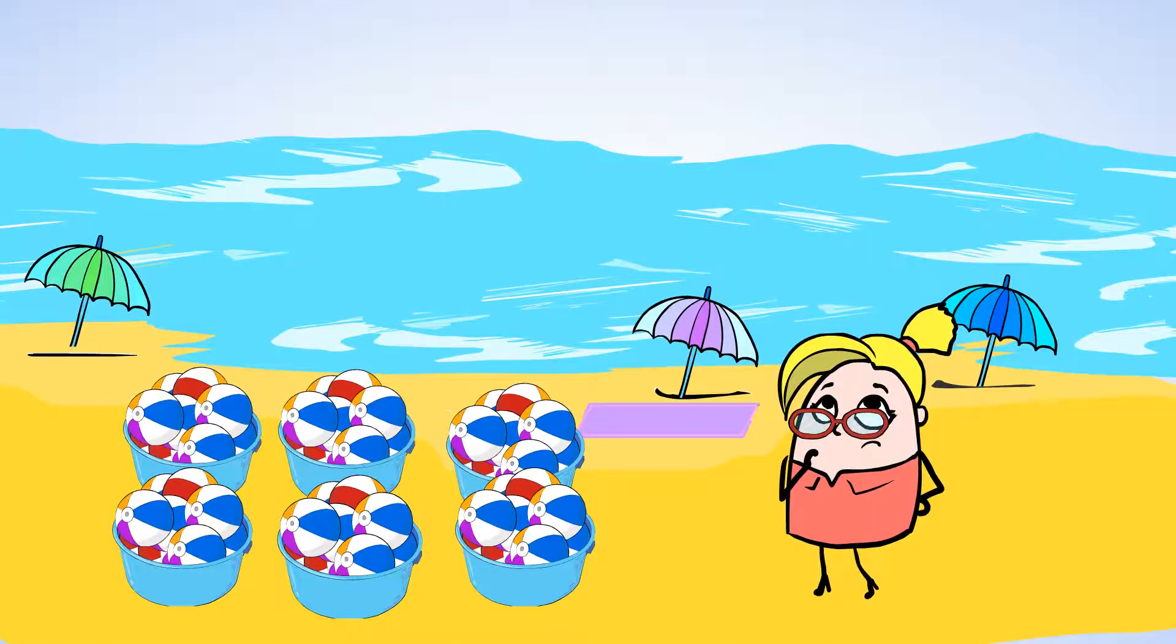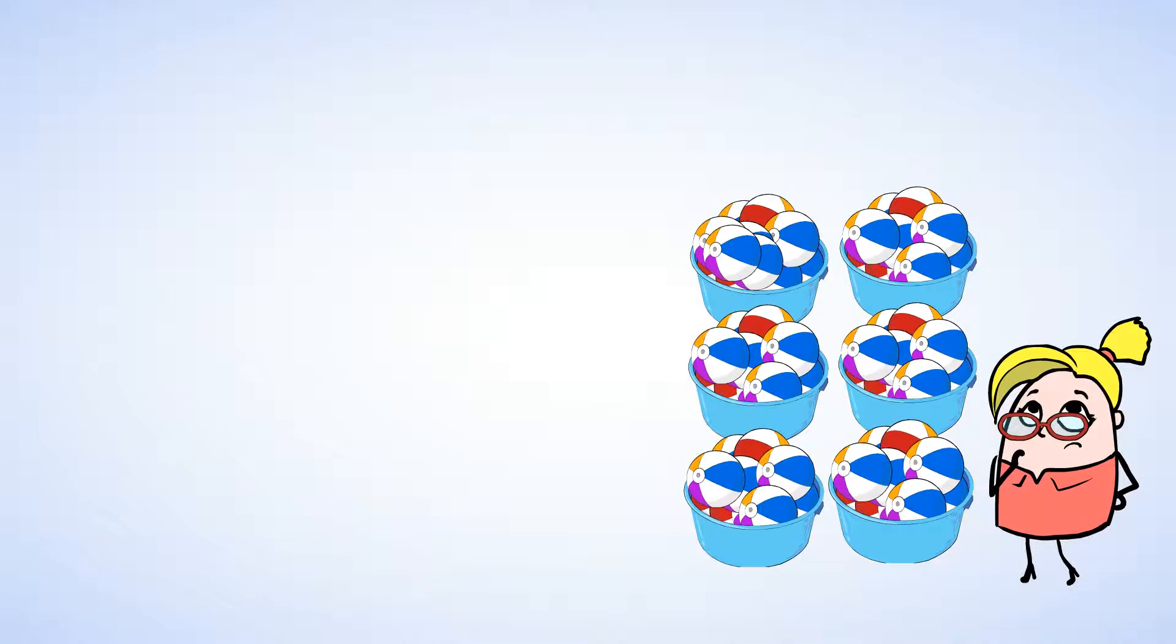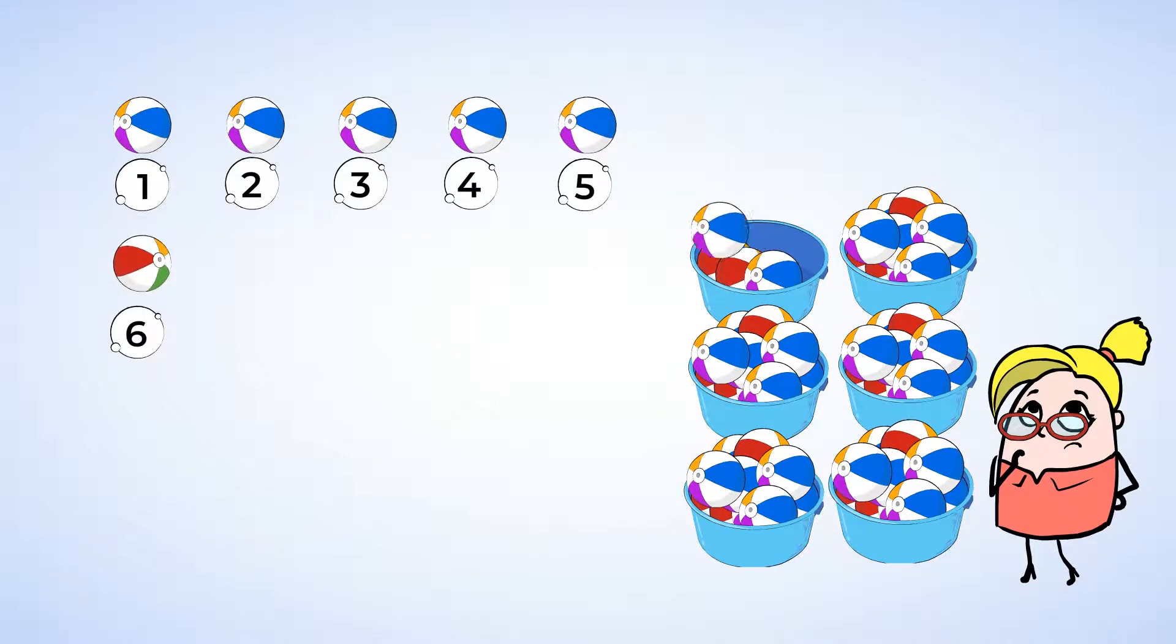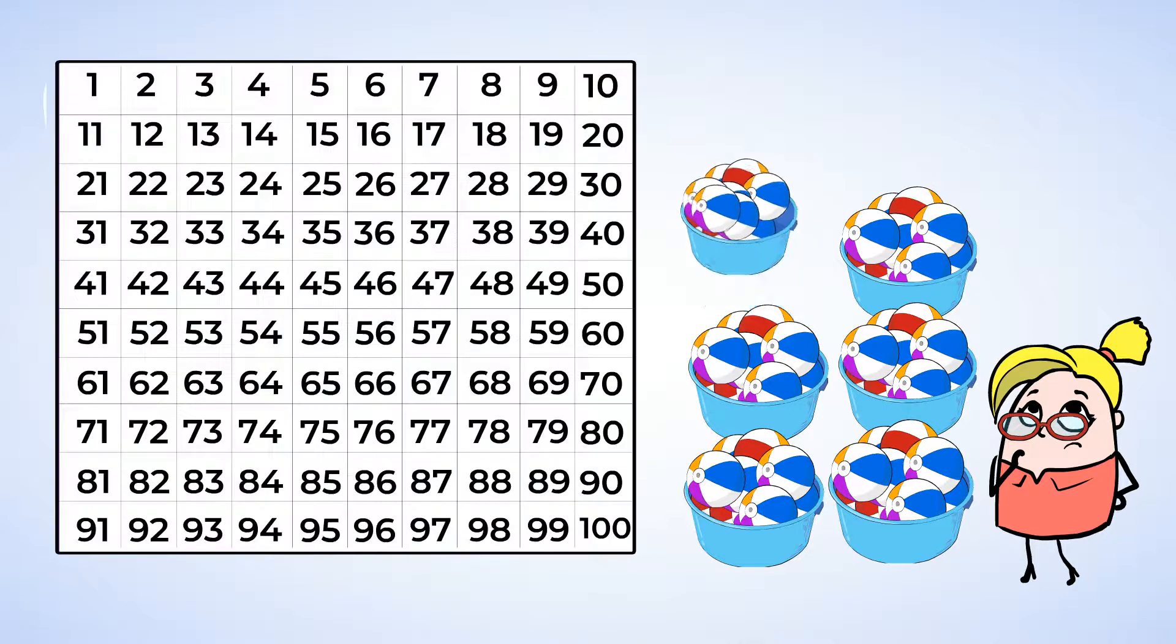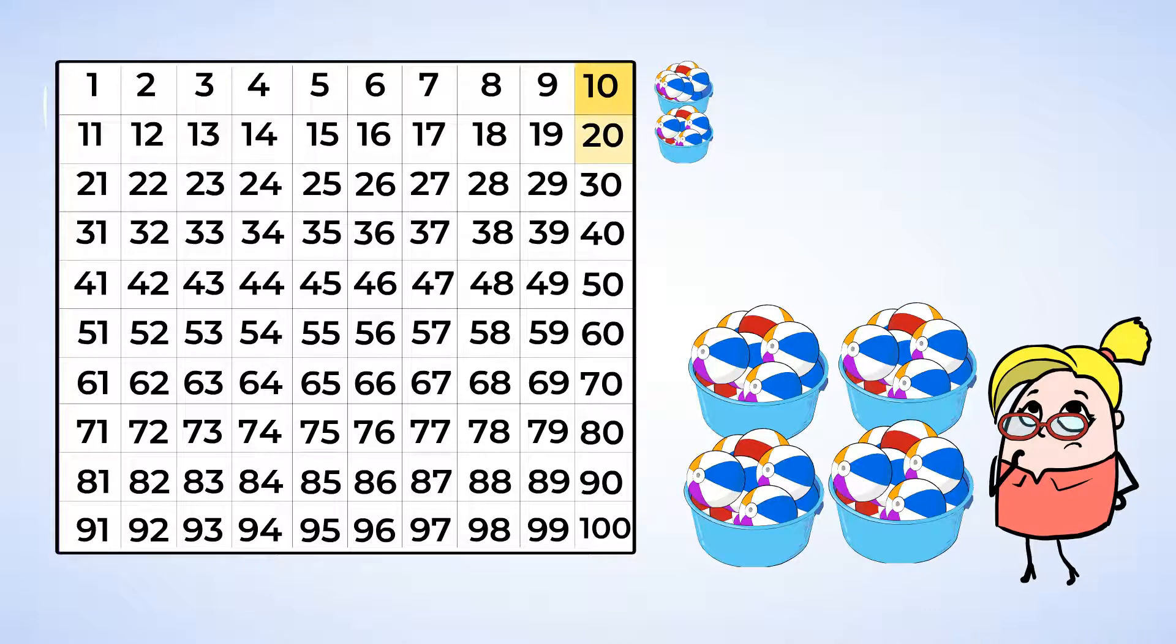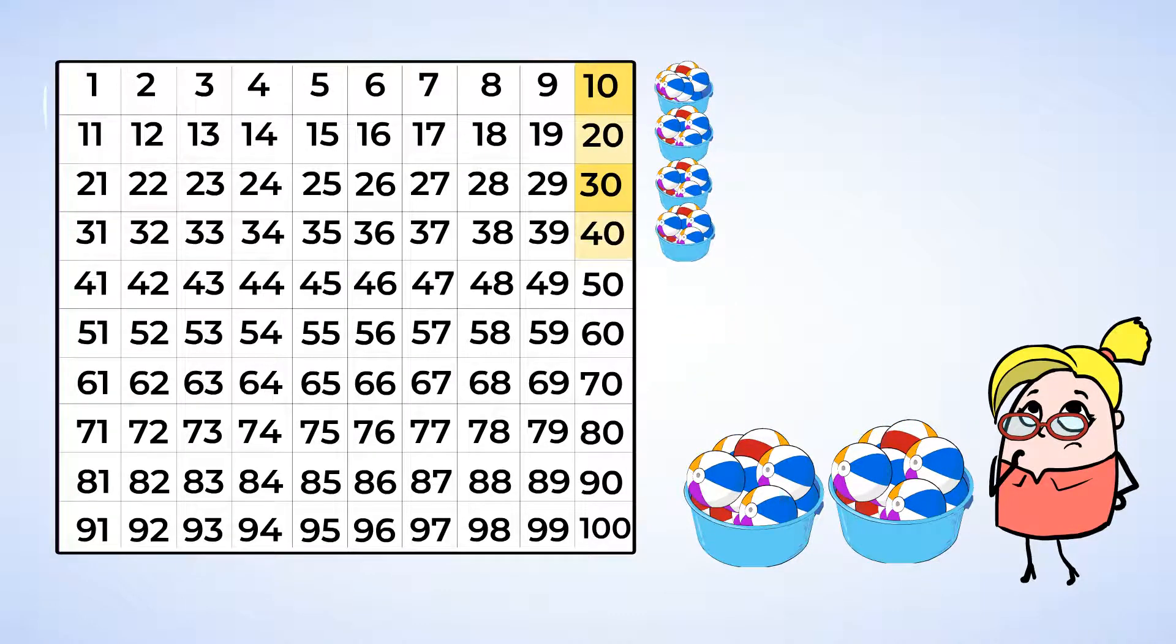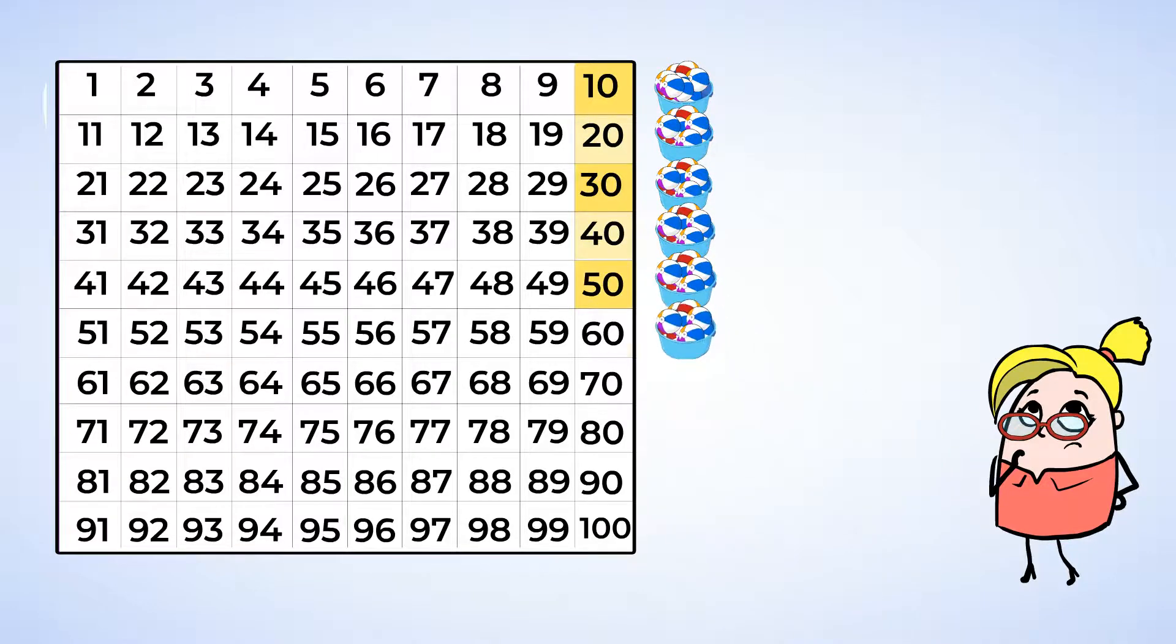Zero the Hero is now going to help us count some more things at the beach. Here are some big buckets of beach balls. Each bucket has 10 beach balls in it. Let's take a look and see how many there are in total. We can count to be sure. 1, 2, 3, 4, 5, 6, 7, 8, 9, 10. That's right, there are 10 beach balls in the buckets. So the first bucket has 10. Add another bucket, 20. Then 30. Now 40. Next 50. And finally 60. Wow, you just counted by tens to 60. And now we know there are 60 beach balls. And that's more than enough beach balls for everyone.